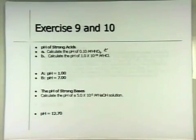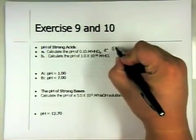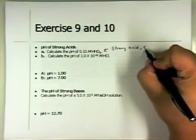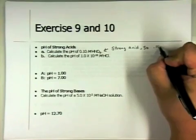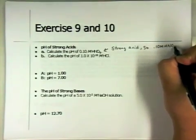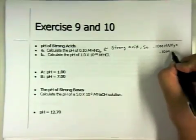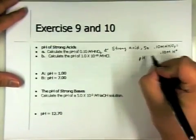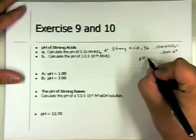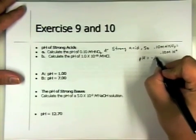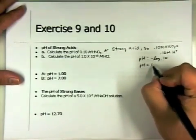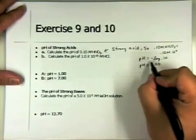The first one, very straightforward. Calculate the pH of 0.10 molar of HNO3. It's a strong acid. So your molarity of 0.10 molar will also equal your molarity of H+. So you can just take the negative log of that to get the concentration. So pH equals negative log of 0.1. So pH ends up being 1.00.